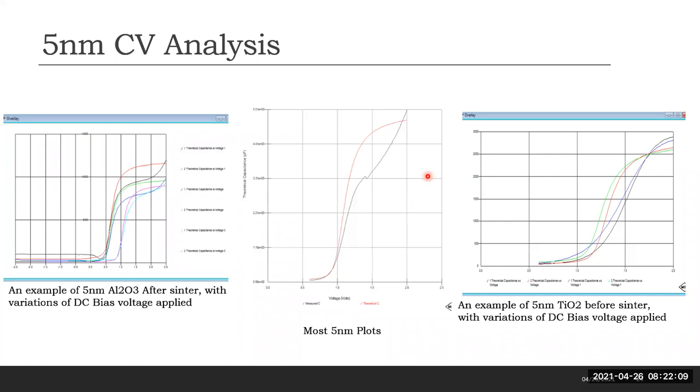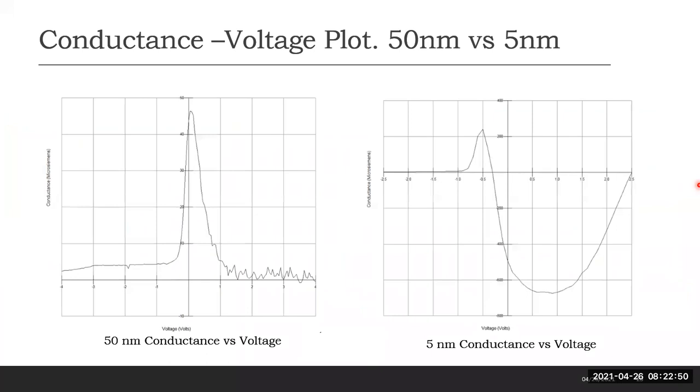In characterizing the 5 nanometer dielectrics, we see that the aluminum oxide after sinter showed issues as the voltage sweep entered the accumulation region of the curve. This may be possibly due to the electric field from the bias approaching the dielectric strength of the field. The titanium oxide shows a severe stretch in the curve, which most likely implies a poor quality silicon oxide interface. The shift to the right is severe as well, showing a lot of trapped charge. It also seems to never really reach accumulation.